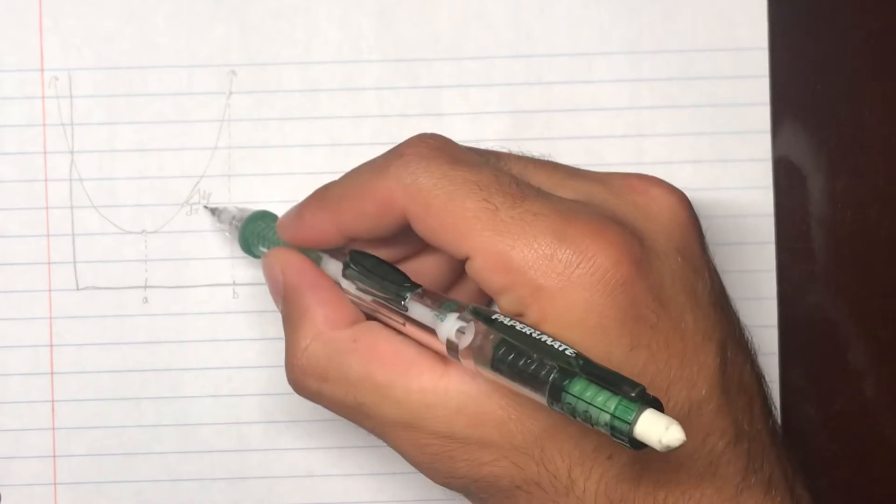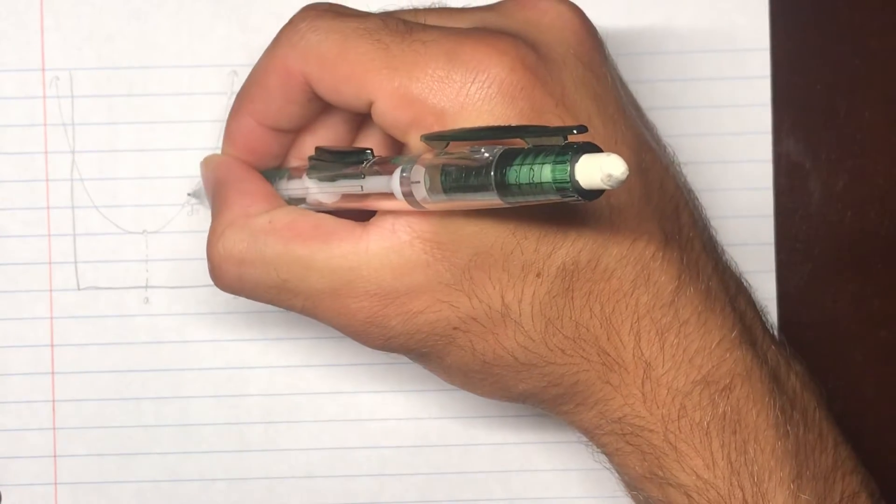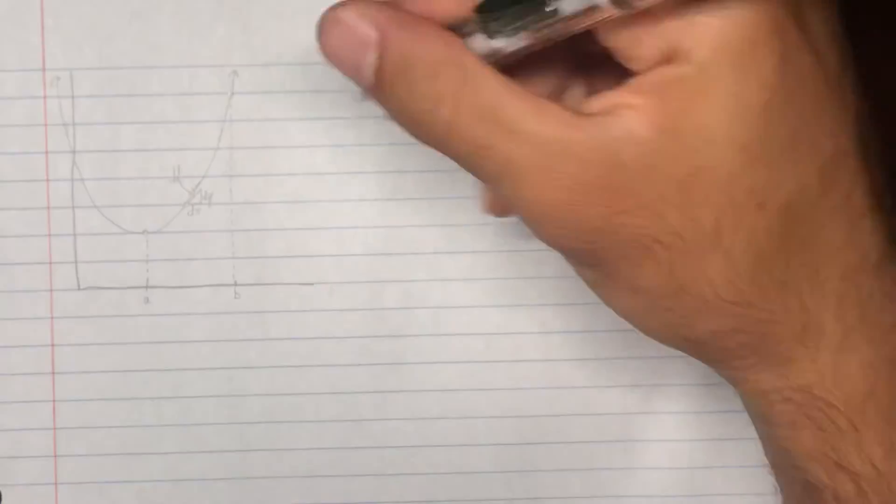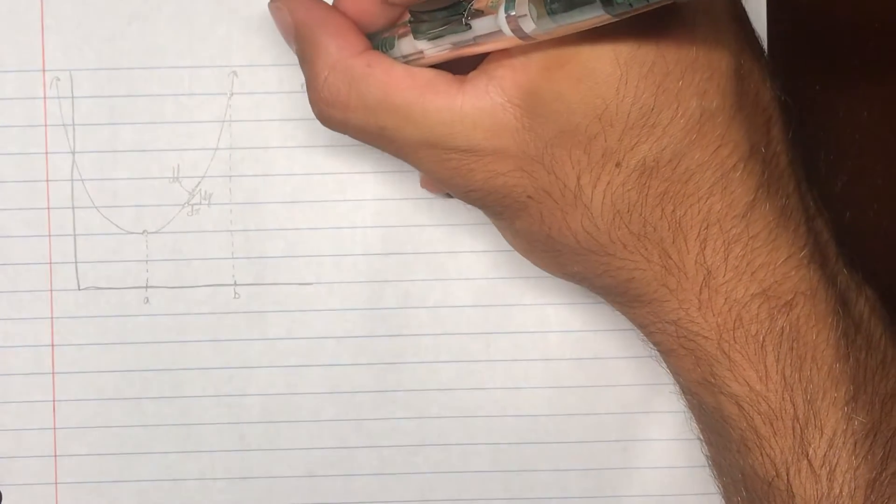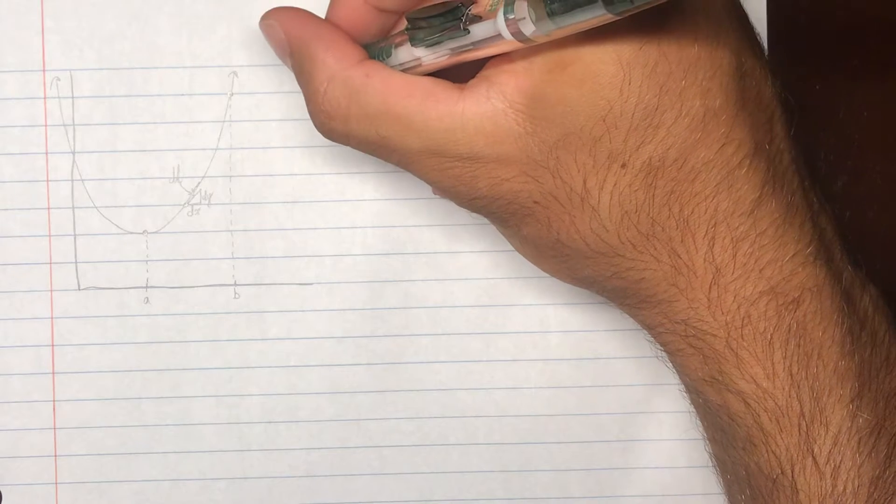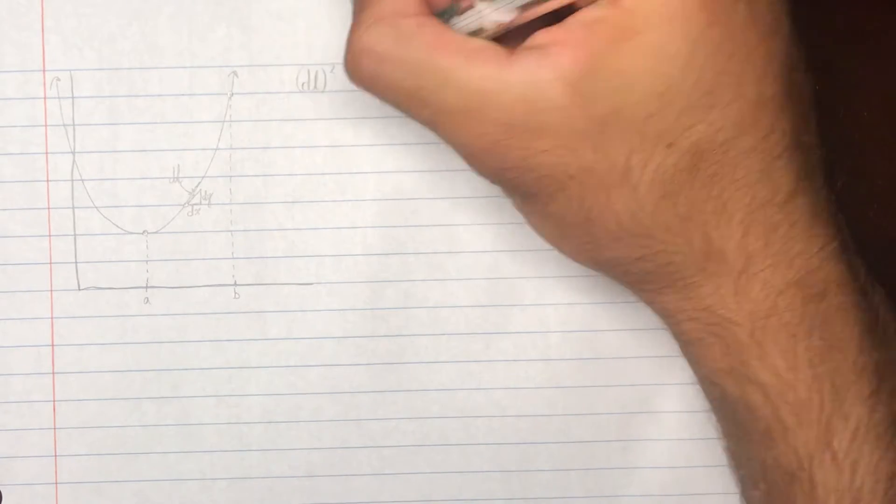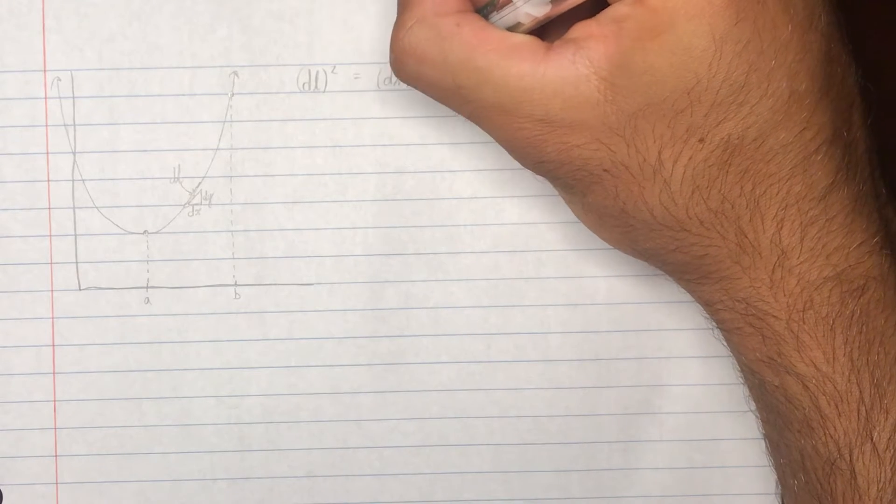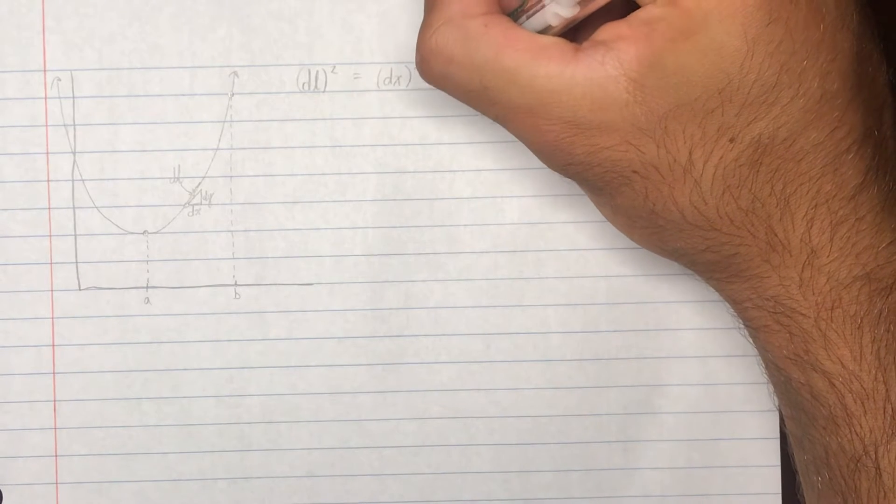But we're just going to rewrite that using these new variables right here. So, dL squared being c squared equals dx squared plus dy squared.